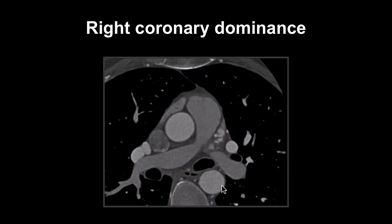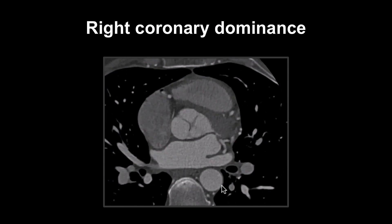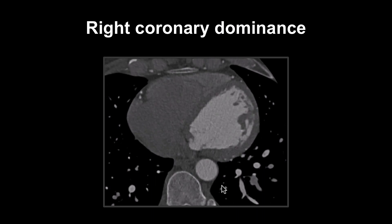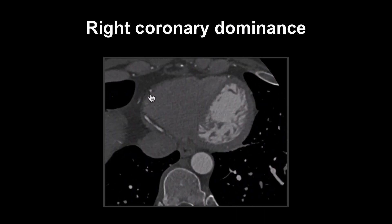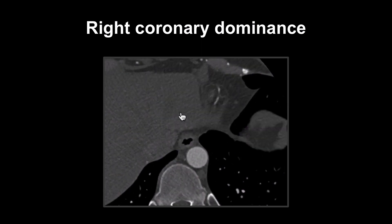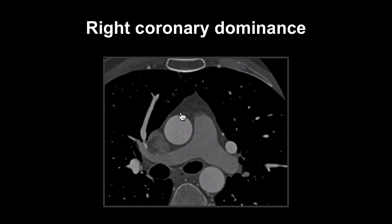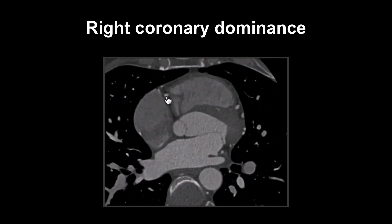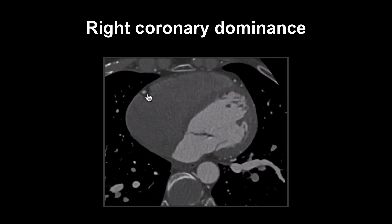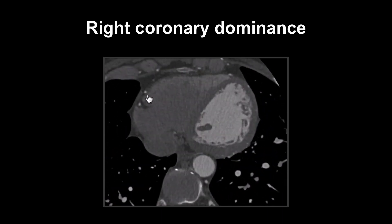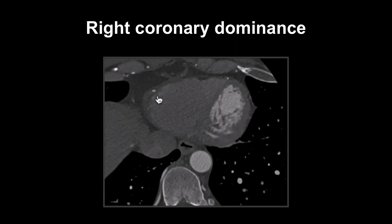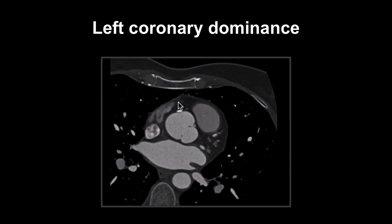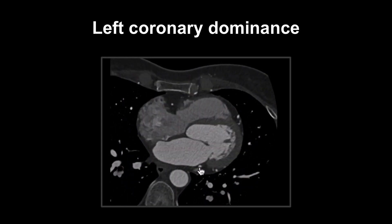This is an example of right coronary dominance. Can you see that the PDA arises from the right coronary artery? This is an example of left coronary dominance. Can you see that the PDA arises from the left circumflex artery?